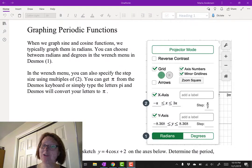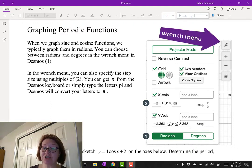In this video I want to talk about graphing periodic functions. When we graph sine and cosine functions, we typically graph them in radians. You can choose between radians and degrees in that wrench menu in Desmos.